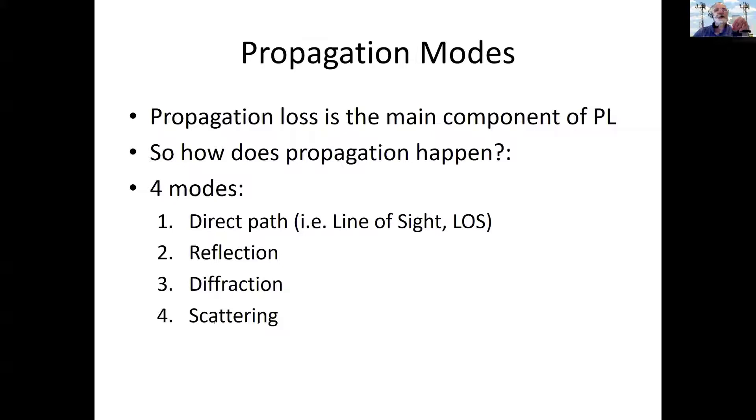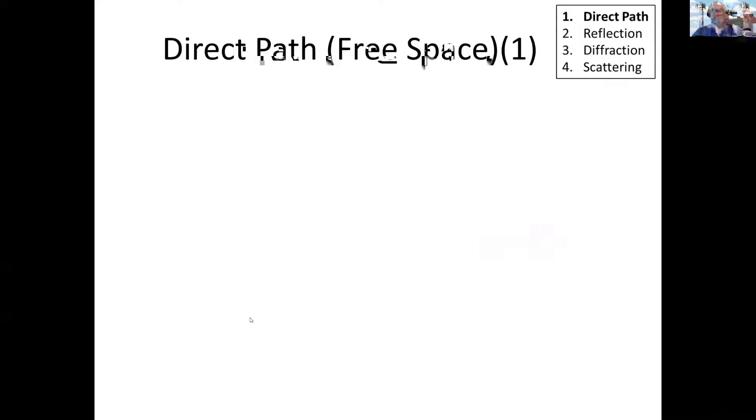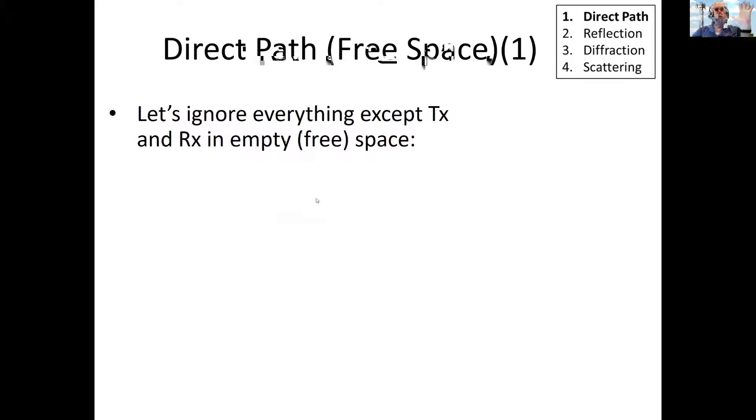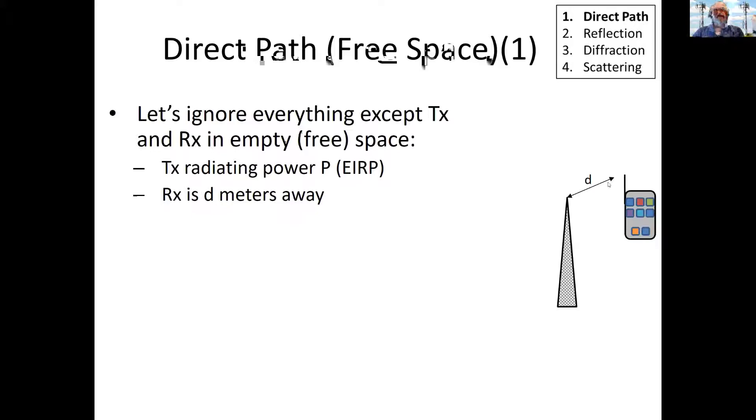So let's take a look at these and think about how they happen. Let's start with the direct path, the simple case. And we'll do this one in a little bit of depth, and then we'll just go over the rest of them briefly for this short talk. For the direct path, we're just going to ignore everything except the transmitter and the receiver. We're out in the middle of outer space someplace. There's nothing else around. What's going to happen?